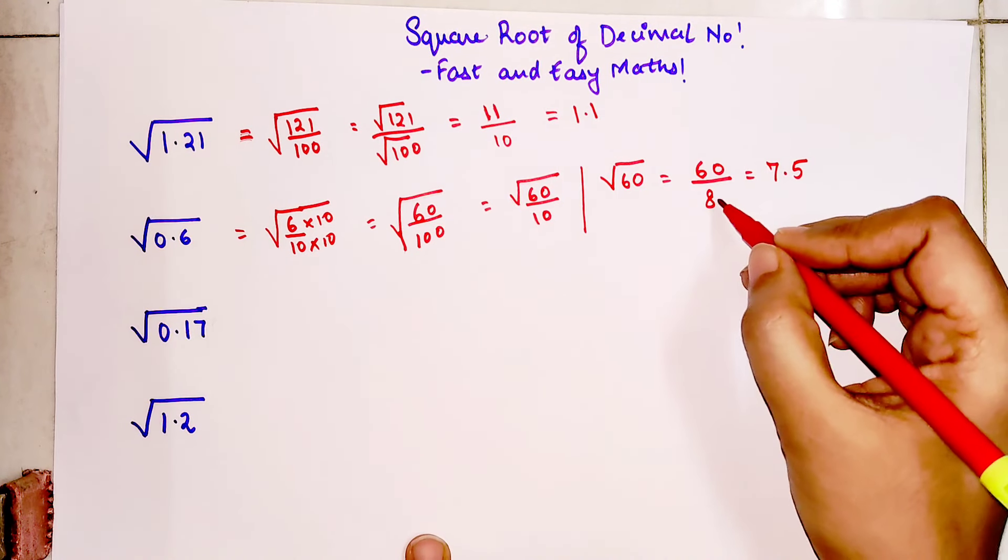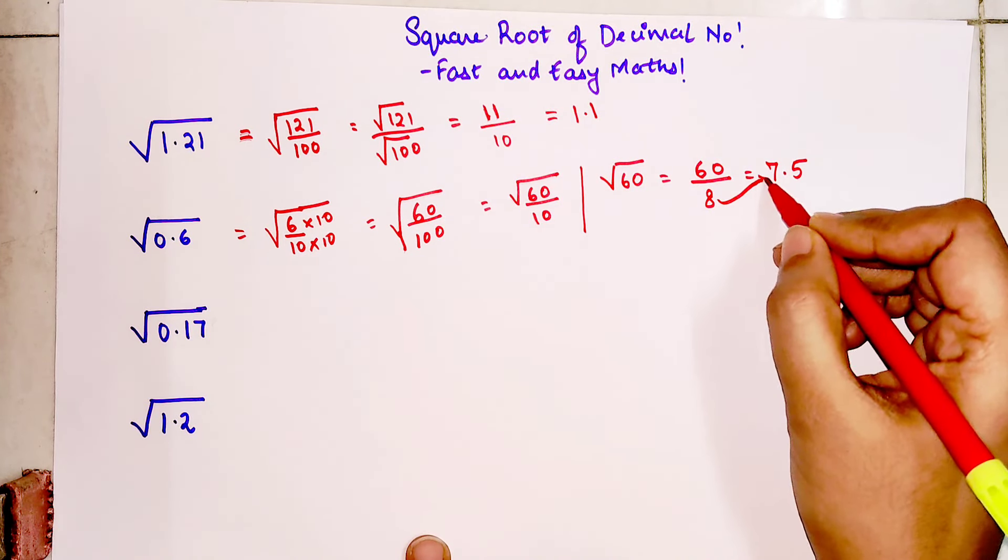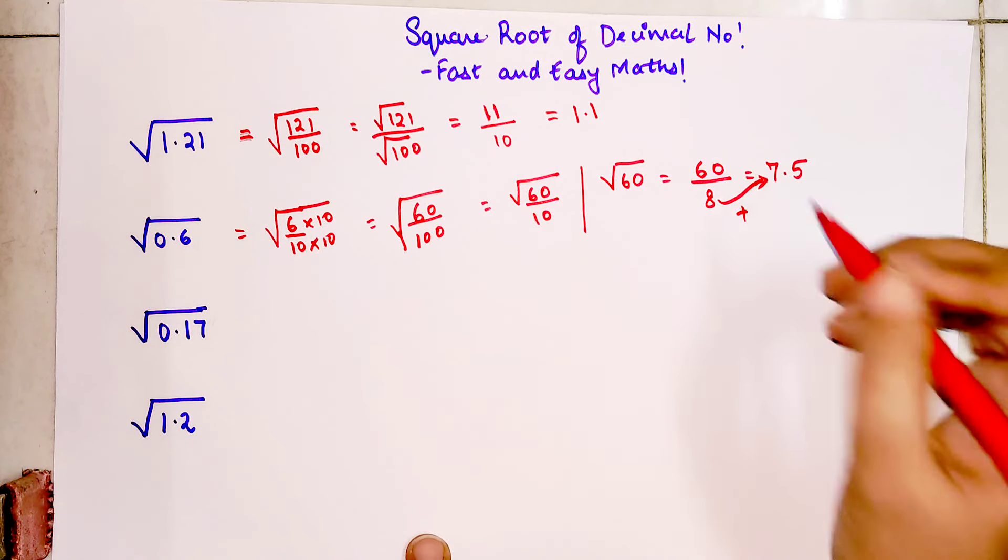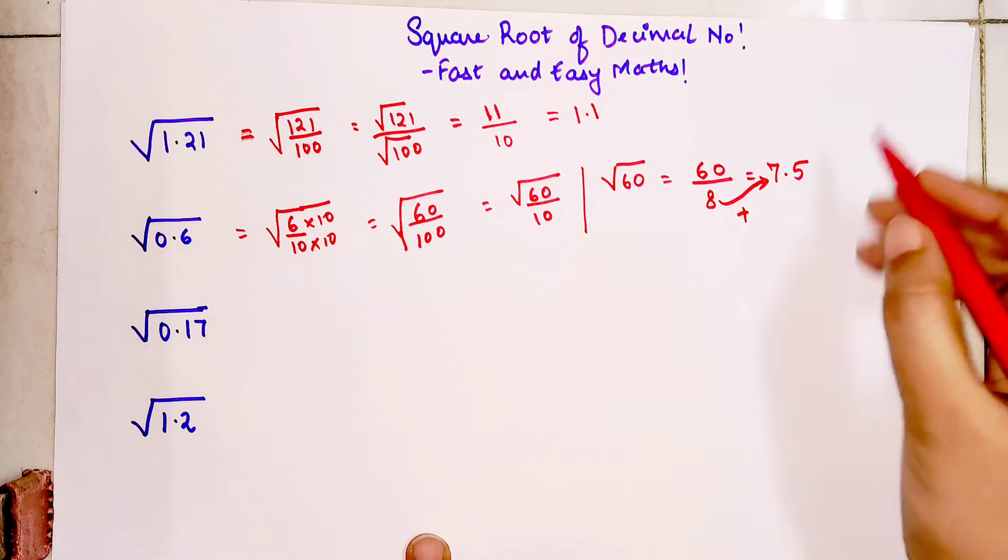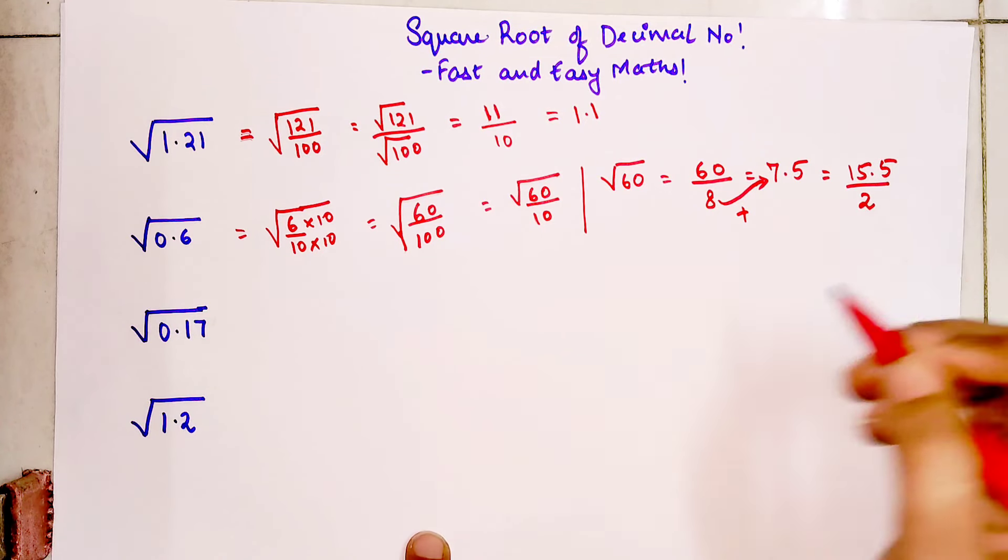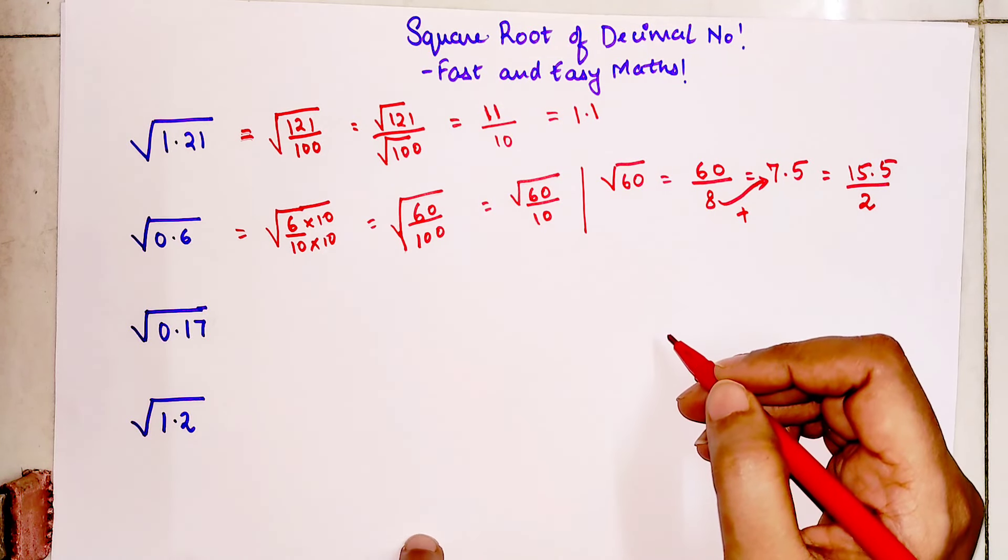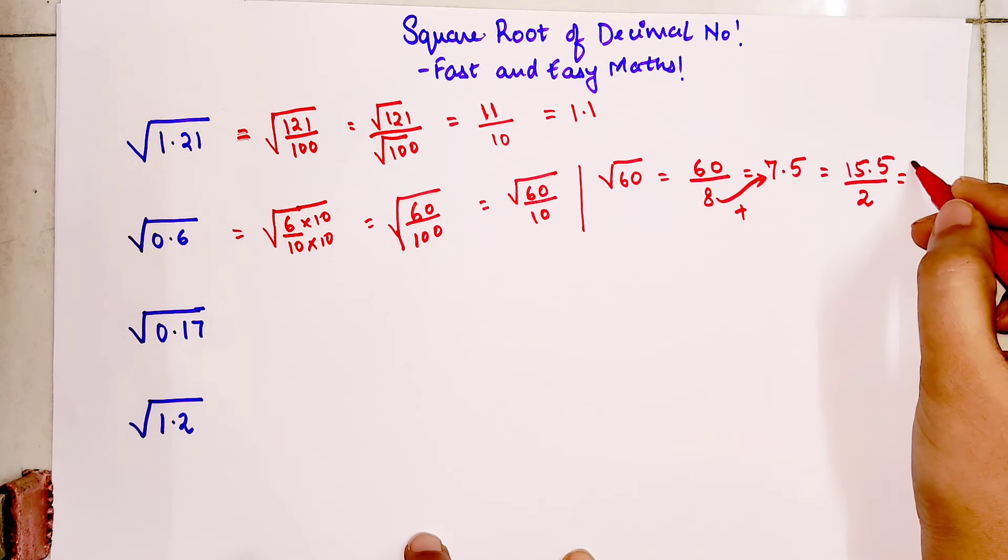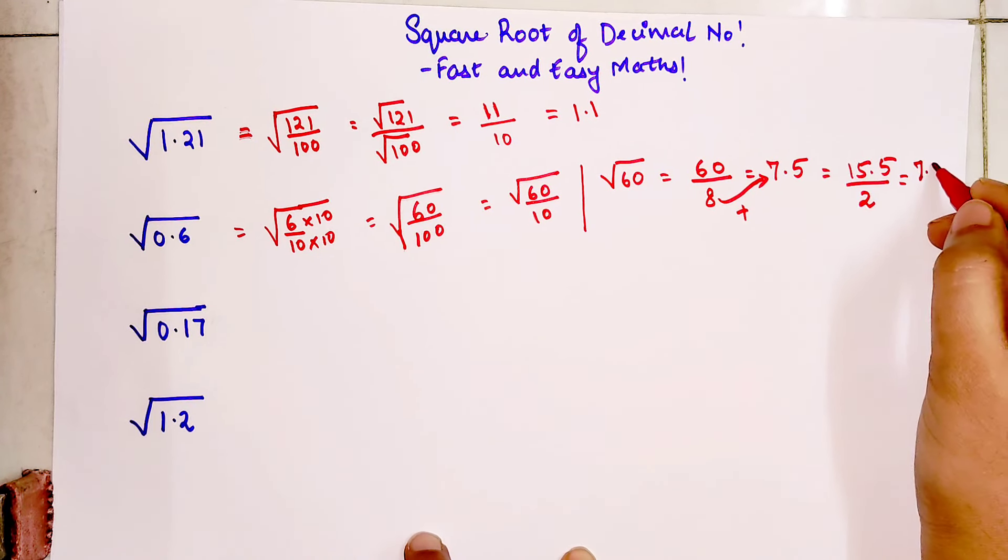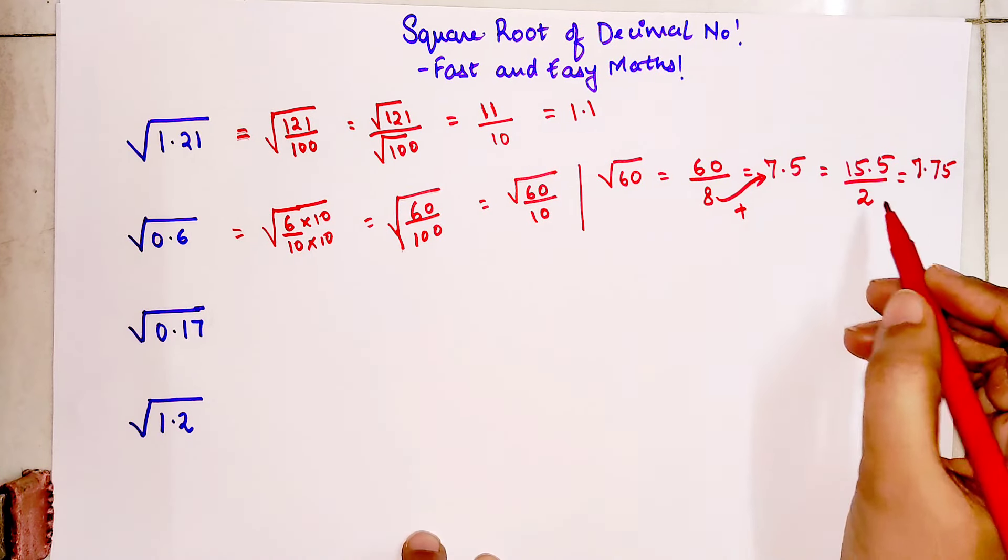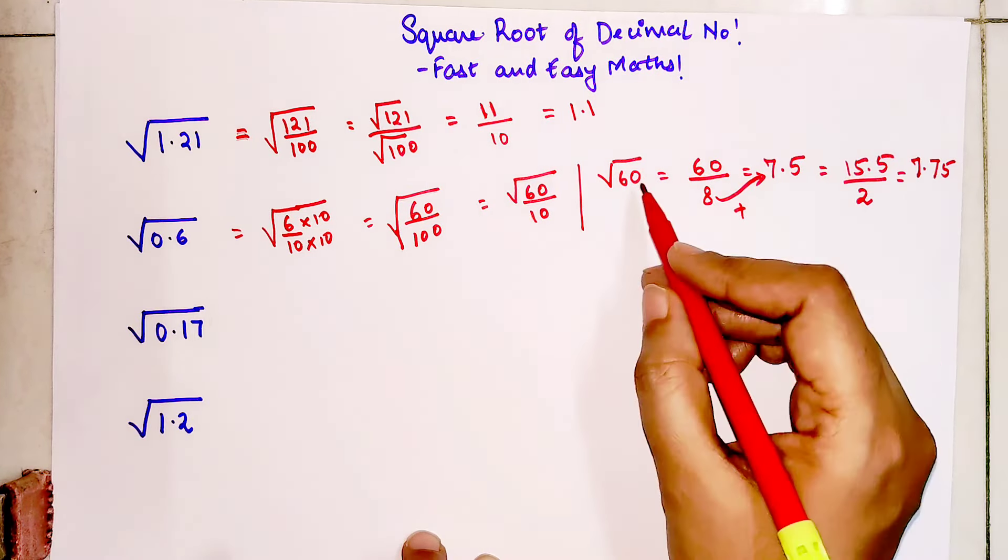Now what you should do is, whatever number you're dividing with, you add that number to the quotient what you've got. So 8 plus 7.5 gets you 15.5, and this number you will divide by 2. So what answer you'll get over here is 7.75. This is your answer for square root of 60.